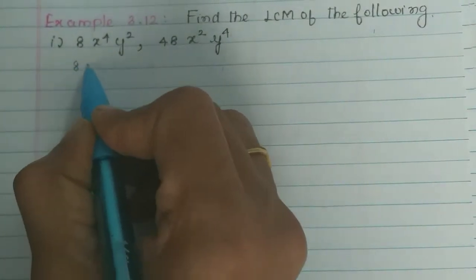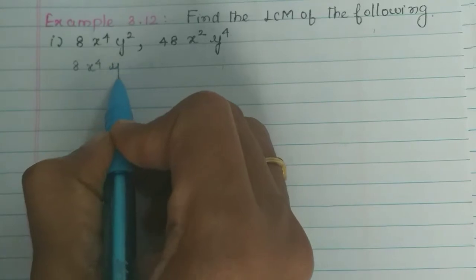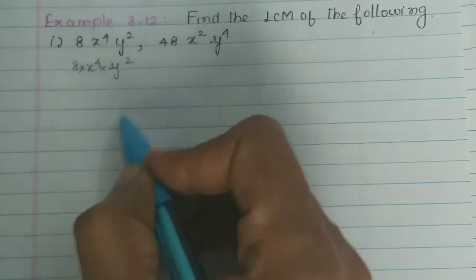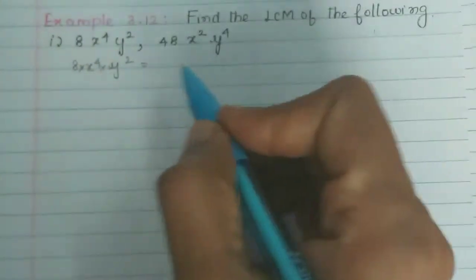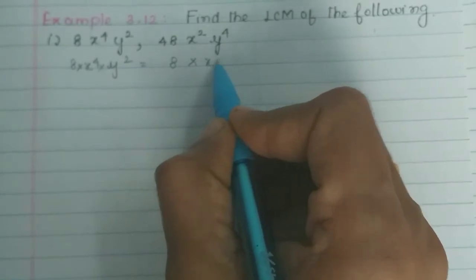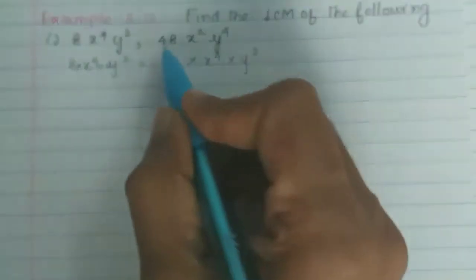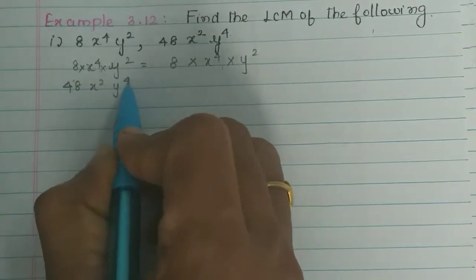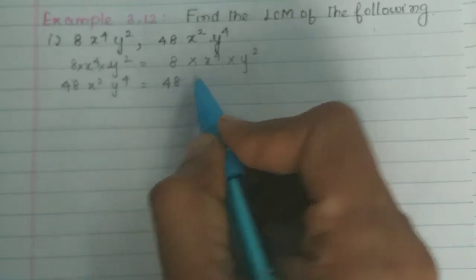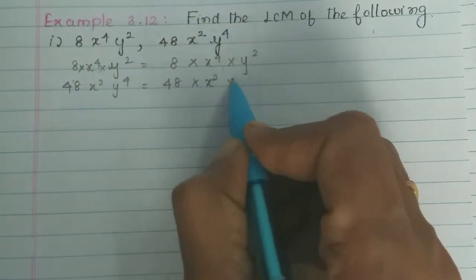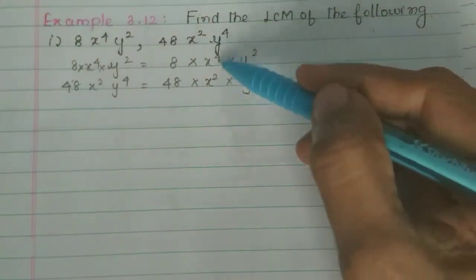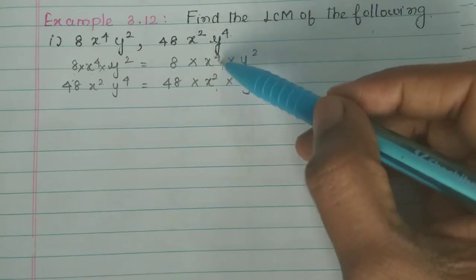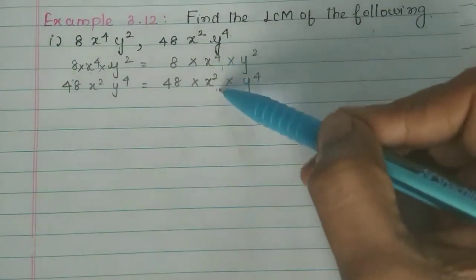First, we have 8x⁴y² and 48x²y⁴. To find the LCM, we look at the powers of each variable. If the powers are greater, that is the LCM. So this is easy to identify — we take the highest power of each term.